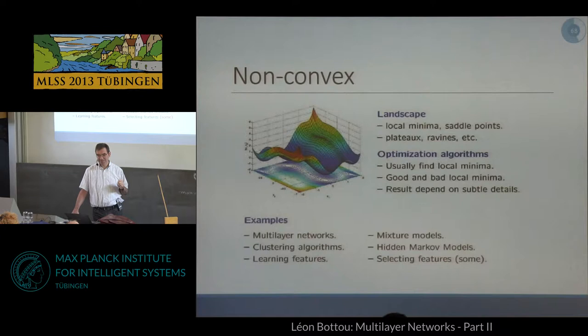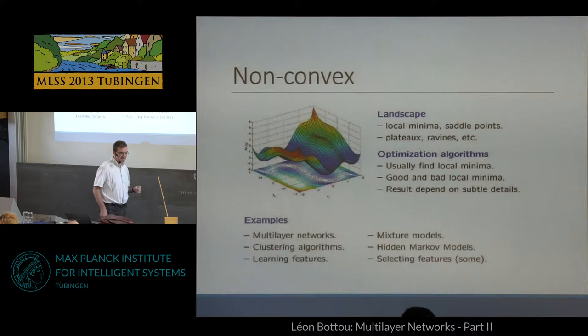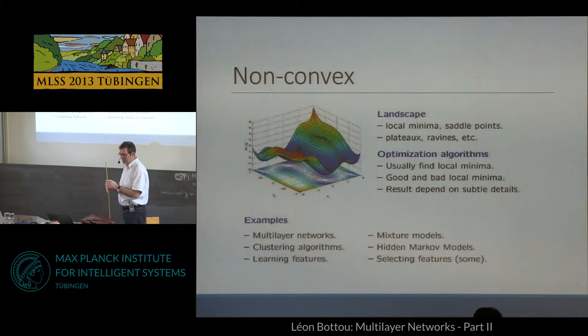Here we're in a non-convex world, so the landscape is a complicated thing. You'll see later that this is a simplification — it's much worse than that. There are local minima, saddle points, plateaus, ravines, and there is a topological issue. We discuss the landscape like we would discuss the landscape outside: you have ravines, gorges, and you have to go down there.